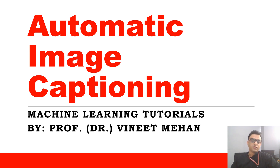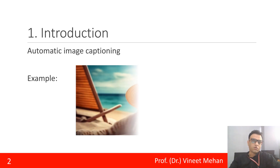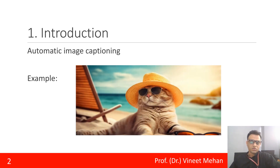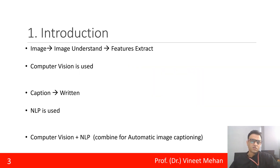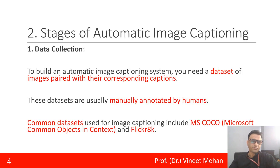The topic of this lecture is automatic image captioning. For example, an image of a cat sitting on the beach wearing a hat and goggles. For automatic image captioning, there are two prominent things: first, computer vision — through which we understand and extract information from the image — and second, caption generation, for which NLP is used. Together, computer vision and NLP are combined for automatic image captioning.